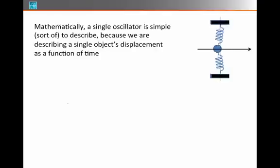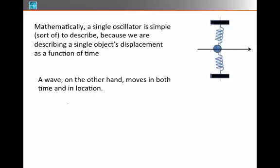So it's a function x as a function of time, and that tells us what the oscillator is doing. Waves are a little bit more complicated, however, because we have to do something that describes the motion of a disturbance in both position and time, because a wave travels on down the length of a medium.